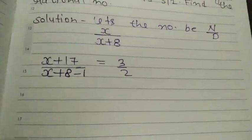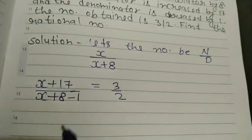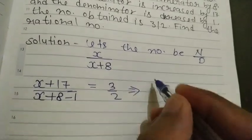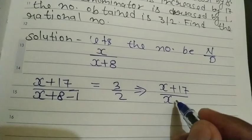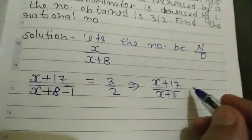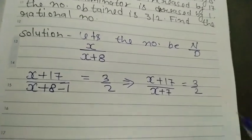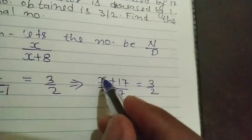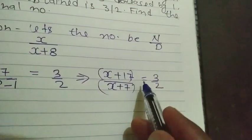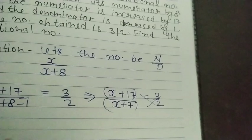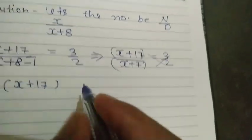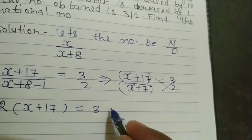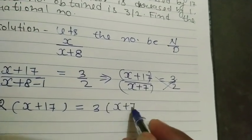Now we will solve this. X plus 17 over X plus 7 equals 3 upon 2. Now here we will use cross multiplication method. So 2 multiplied by X plus 17, and 3 will multiply X plus 7.